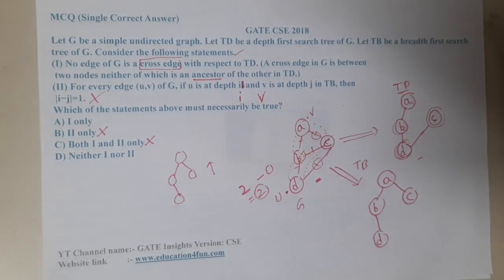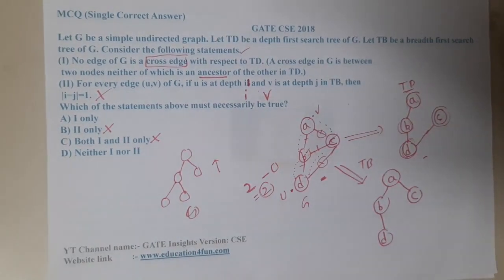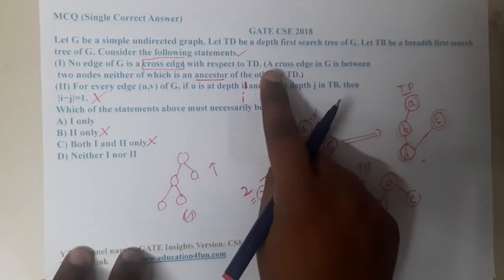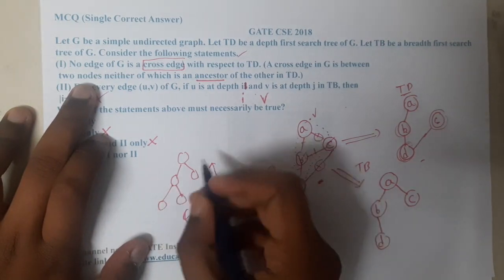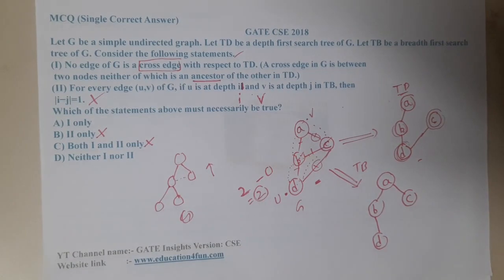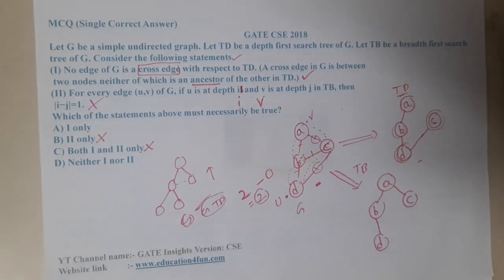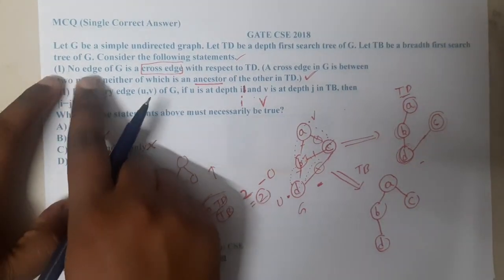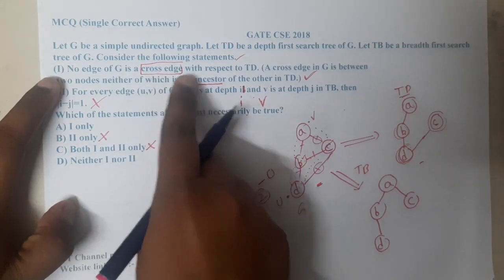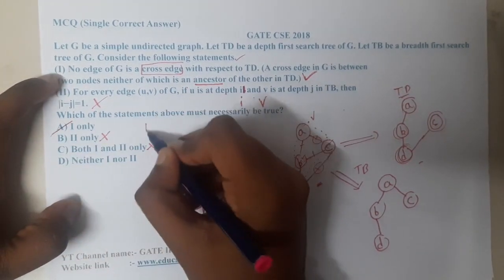Let me draw a simpler tree directly. Assume this tree is our graph G — every tree is a graph. A cross edge is between two nodes neither of which is an ancestor. If the graph itself is a tree, then TD will be the same graph, TB will also be the same since there are no extra edges. So no edge of G can be a cross edge with respect to TD, making option A correct.